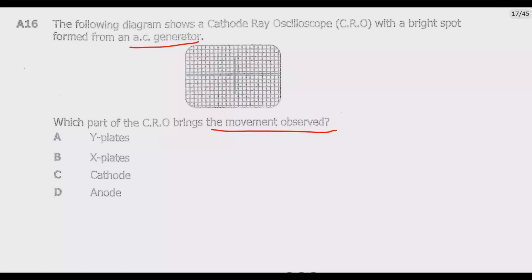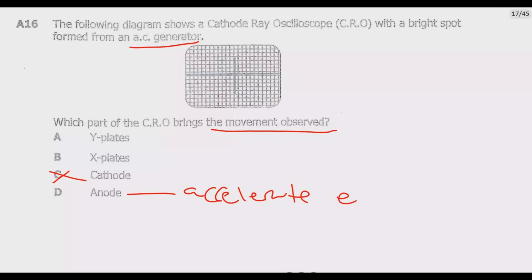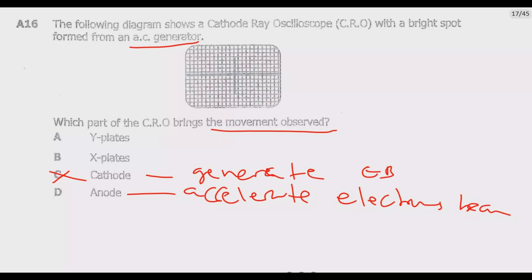We can start by eliminating the obvious ones — C and D. The cathode is part of the electron gun assembly of the cathode ray oscilloscope, which generates the electron beam. While the cathode is crucial for the operation of the CRO, it does not directly control the movement of the bright spot on the screen. Similarly, the anode is part of the electron gun assembly which helps to accelerate electrons — so both C and D don't control the light spot movement on the screen.